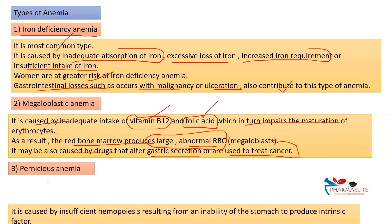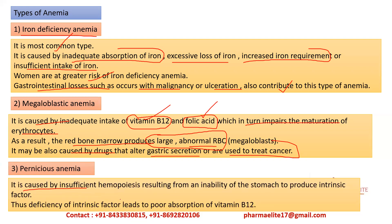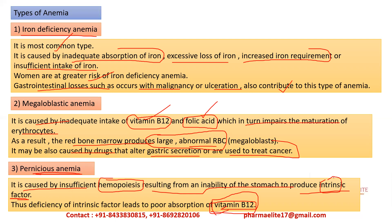Pernicious anemia is caused by insufficient haemopoiesis — the formation of different formed elements — resulting from an inability of the stomach to produce intrinsic factor. This intrinsic factor is required for the absorption of vitamin B12, which is very important for haemopoiesis. Deficiency of intrinsic factor leads to poor absorption of vitamin B12, resulting in pernicious anemia.